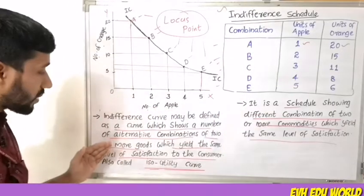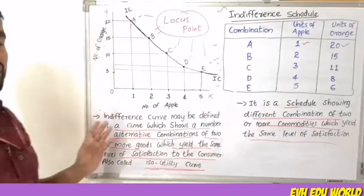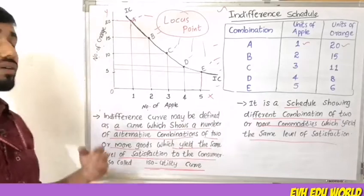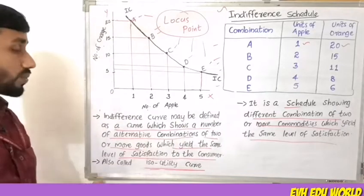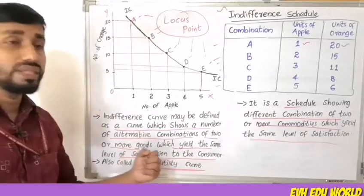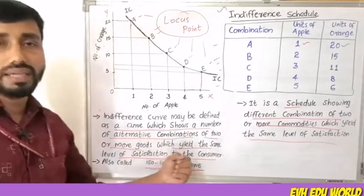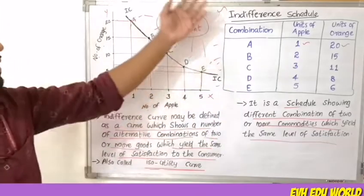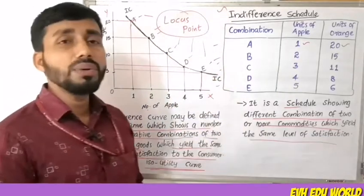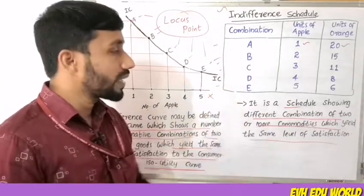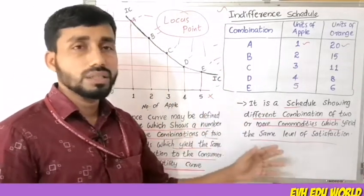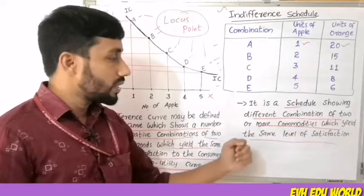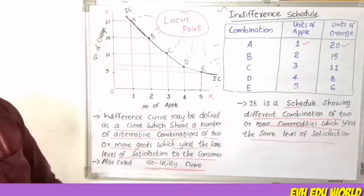An Indifference Curve is a curve showing the number of alternative combinations of two or more goods which yield the same level of satisfaction or utility. An Indifference Schedule is a schedule showing the number of alternative combinations of two or more commodities which yield the same level of satisfaction.